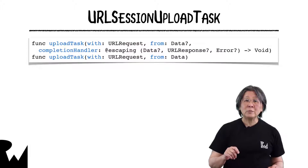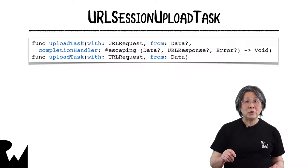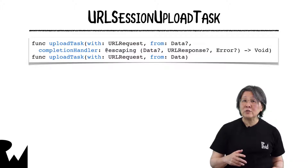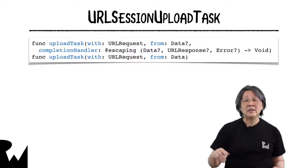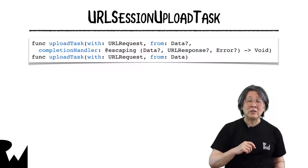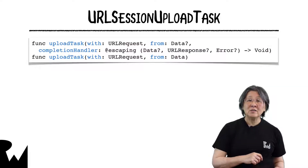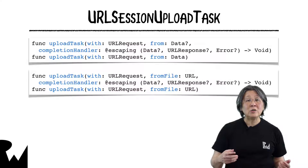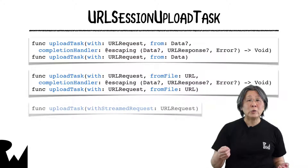Note the differences between Upload and Download Task methods. You can't create an Upload Task with URL because you must set the HTTP method to Post or Put, so you have to create a URL request. Upload Task methods have an additional parameter for specifying the data that will be uploaded — this is the data that you would put into the request's HTTP body for a data task, so this saves you having to write that statement. Instead of a data object, you can create a task to upload a file, and there's also a streamed request option.